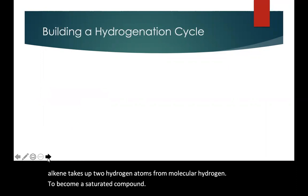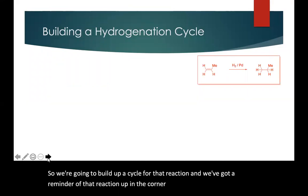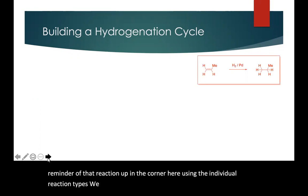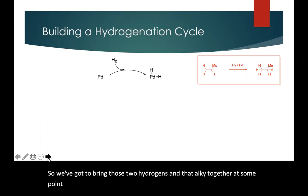So we're going to build up a cycle for that reaction. We've got a reminder of that reaction up in the corner here, using the individual reaction types we saw on the previous page. So we've got to bring those two hydrogens and that alkene together at some point. The two hydrogens are currently bonded to each other. We've got to get them apart from each other.